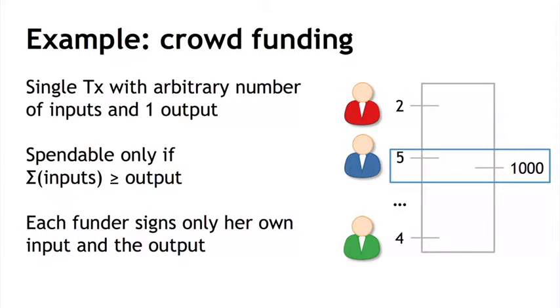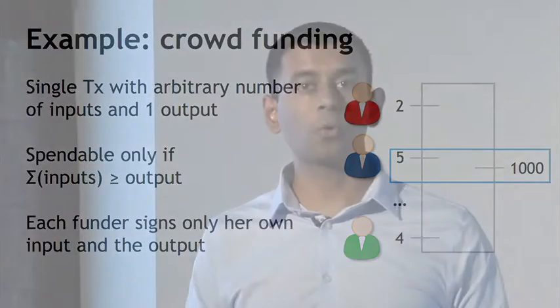The entrepreneur goes collecting these signatures, but the Bitcoin transaction will only be spendable if the sum of the inputs eventually reaches greater than or equal to the pre-specified output value. This is something you can actually achieve today on Bitcoin, but it starts to get into some little-known corners — it's not the everyday type of Bitcoin transaction.